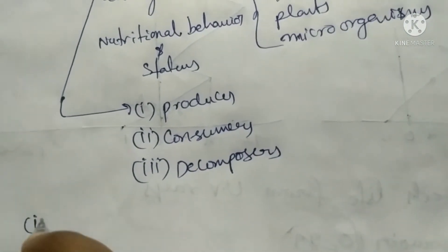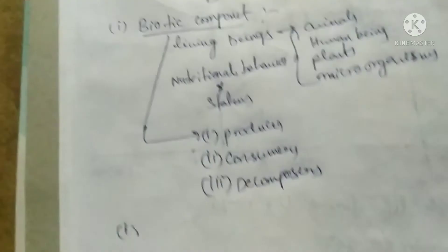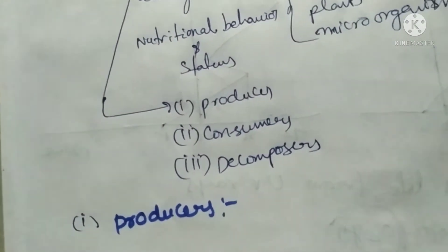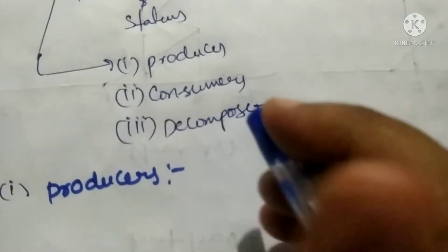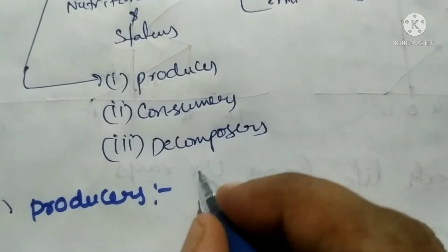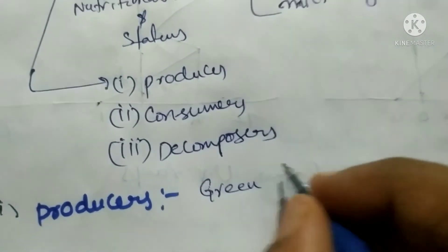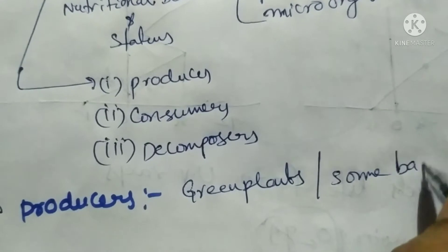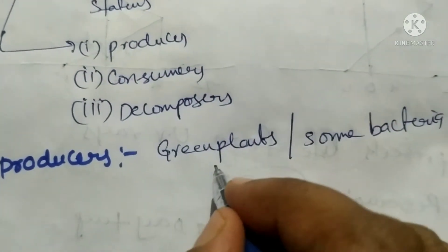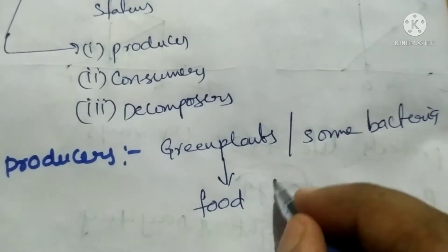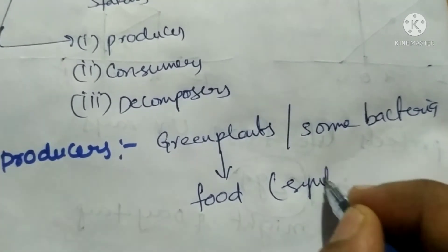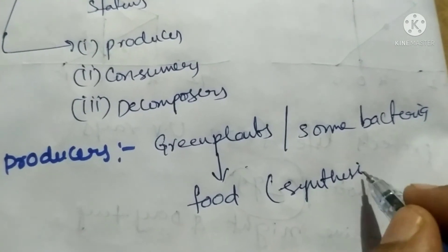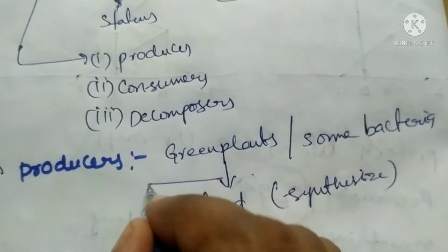Let us discuss the first biotic component, that is producers. Producers means which synthesize their own food — which produce their own food. All the green plants and some bacteria can synthesize their own food by the process of photosynthesis.